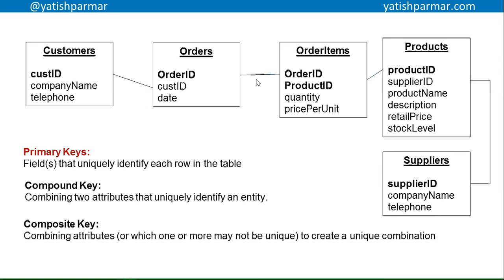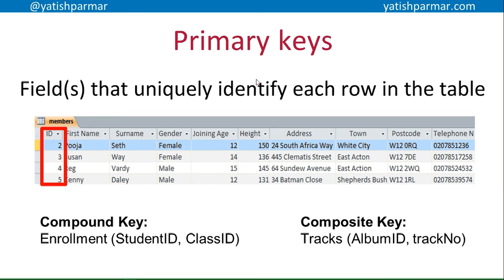A composite key is where you combine two or more attributes, but one of those fields might not be unique on its own — when combined, however, they create a unique combination. An example: in a music database cataloging CDs, each album has a unique ID but track numbers are not unique across albums (track one, track two, track three appear on every album). By combining the album ID and the track number in a tracks table, you get a unique row to which you can add other attributes like track title, duration, et cetera.